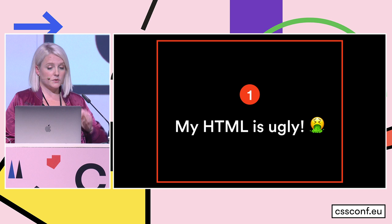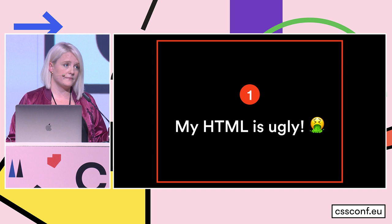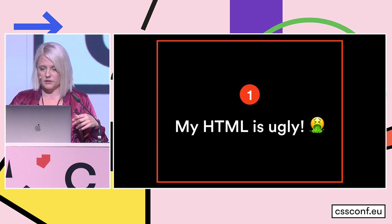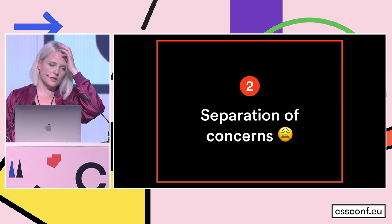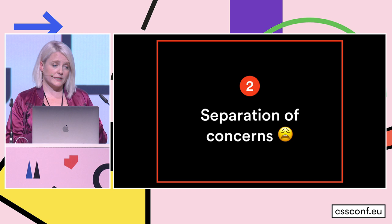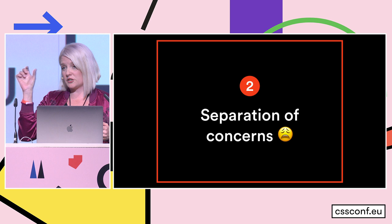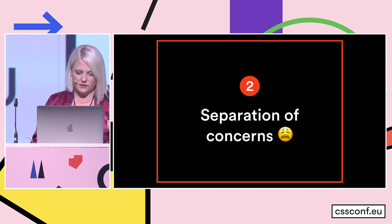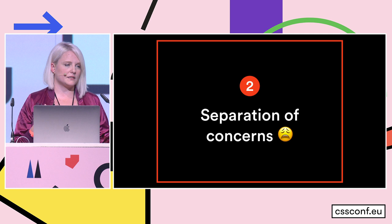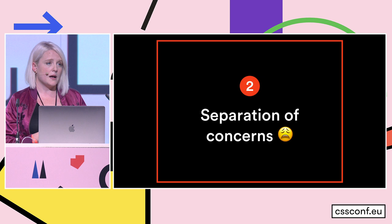Inline styles don't support media queries — most functional CSS paradigms do. Inline styles don't support hover or focus states — functional CSS does. And inline styles can only target one element at a time, whereas with functional styles you can use these classes on multiple elements. Another critique is the separation of concerns. There's a lot of thought about how styles and content need to be separated — your HTML shouldn't be concerned with your styles. That's kind of where semantic class names come in. The idea is that if you're describing the style in your class name, that's coupling your design thinking with your structural thinking.